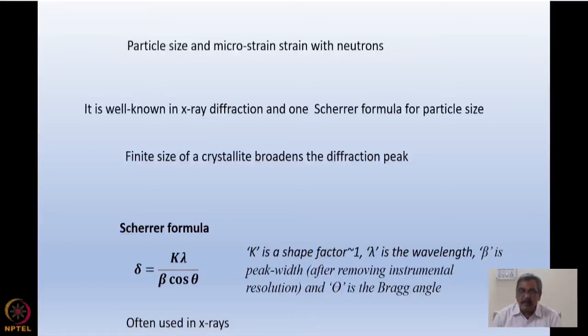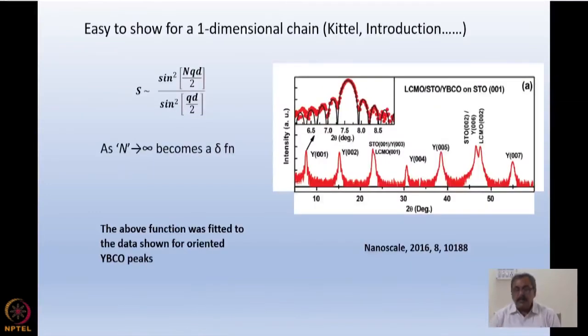This particle size broadening is due to the finite size of the crystal, but the fact is that the X-ray or the neutron has got a coherence length, and the particle size should be smaller than the coherence length for this approach to be effective.